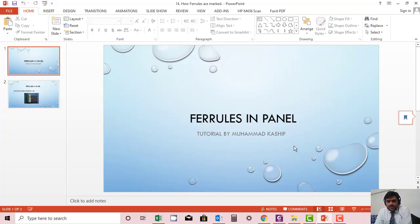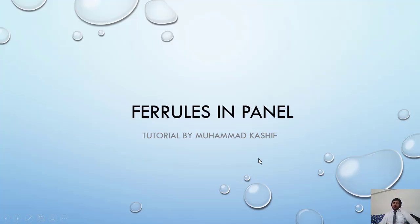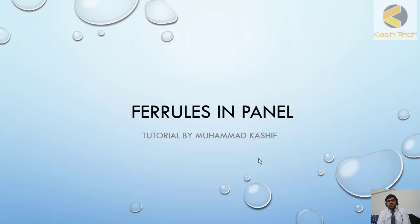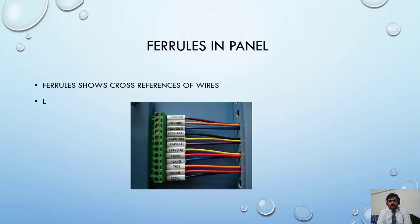Welcome. Now I will open up a new topic which is ferrules. This is not directly related to how to read drawings, but drawings also most of the time show the ferrule rules. Ferrules — let's see the next picture. Here you can see wires coming from an external source, connected to this terminal block. These small white printed tubes are called ferrules. Normally in the panel you will see the terminal block and these ferrules.